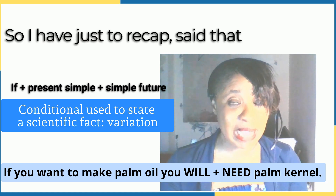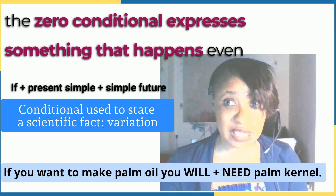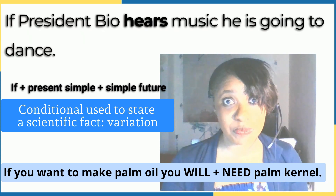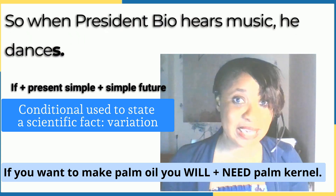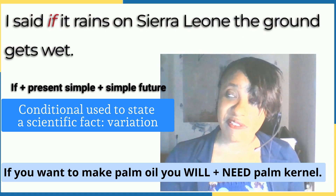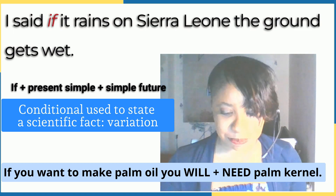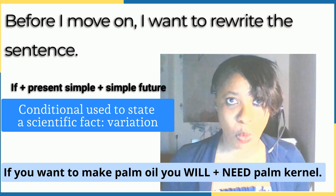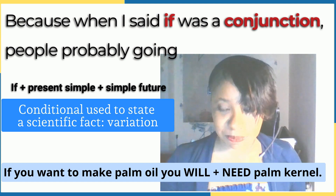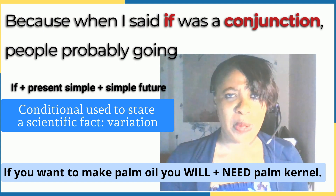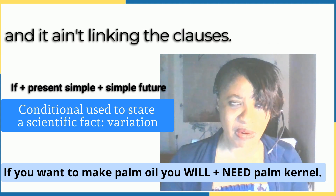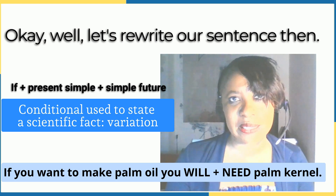To recap: the zero conditional expresses something that always happens — if President Bill hears music, he dances; when it rains, the ground gets wet. Now, I said 'if' is a conjunction. People may think it's not linking clauses if it's at the front of the sentence, so let me rewrite the sentence. President Bill dances if he hears music — now the conjunction 'if' is in the middle, conjoining two clauses. I can put 'if' at the front — the initial position — or in the middle of the sentence.